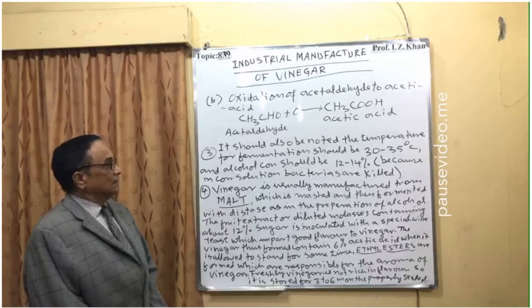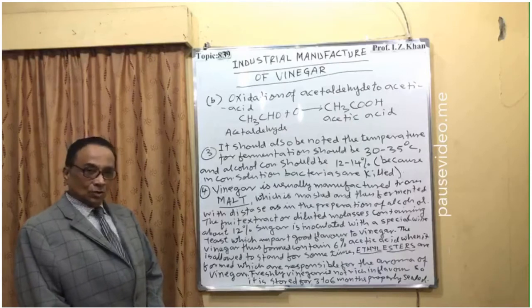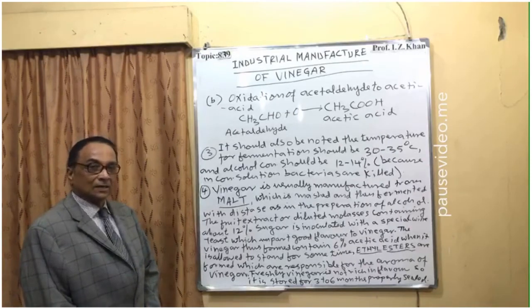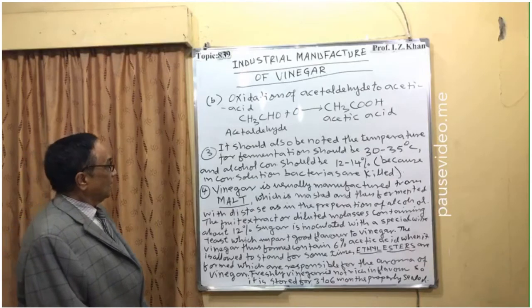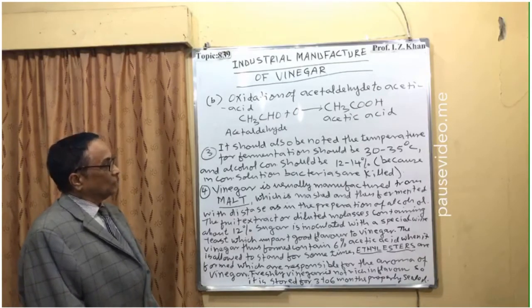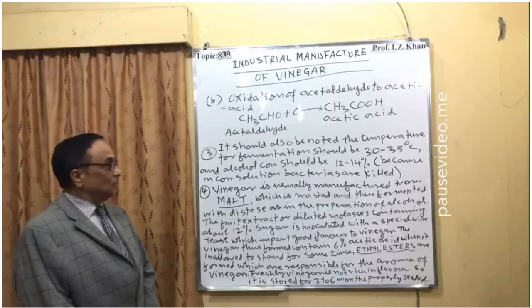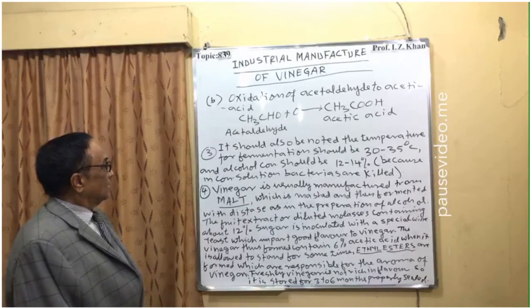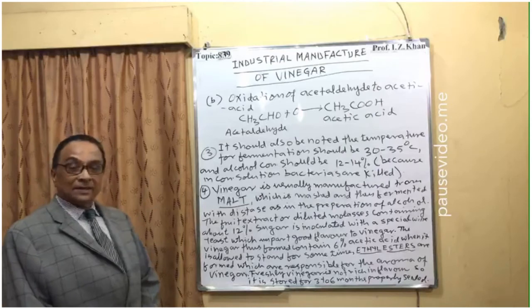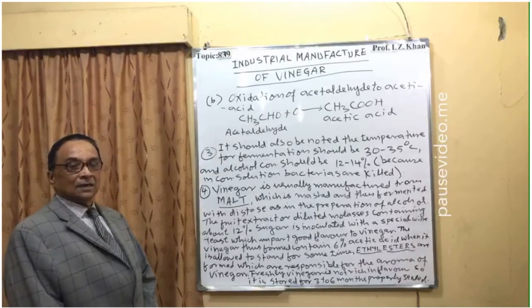It should be noted that the temperature for fermentation should be between 30 to 35 degrees centigrade. If temperature is high, industrial production will be very low because the acetic acid is converted into carbon dioxide gas and water. The reason is that this fermentation and oxidation requires low temperature because it is exothermic. If the temperature is too high, production will be drastically reduced. Also, the alcohol concentration should be 12 to 14%, because in concentrated solution the bacteria are killed. If the percentage of alcohol goes more than 12 to 14%, fermentation will not take place.